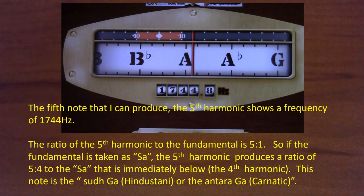The fifth harmonic shows a frequency of around 1744 hertz. The ratio of the fifth harmonic to the fundamental is five to one. So if the fundamental is taken as Sa, the fifth harmonic produces a ratio of five to four to the Sa that is immediately below — the fourth harmonic. This note is the Suddha Ga in the Hindustani style, or the Antara Ga in the Carnatic style.